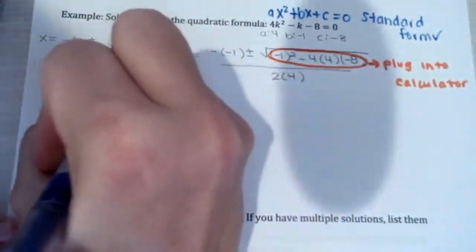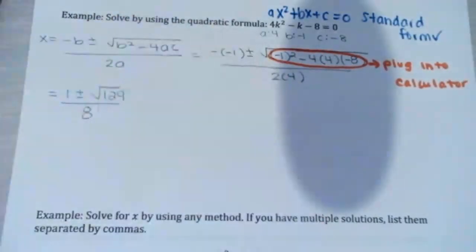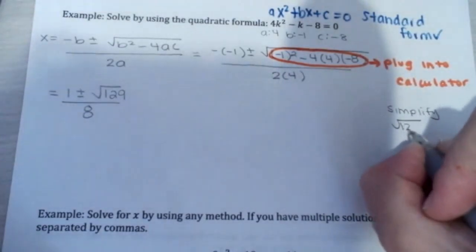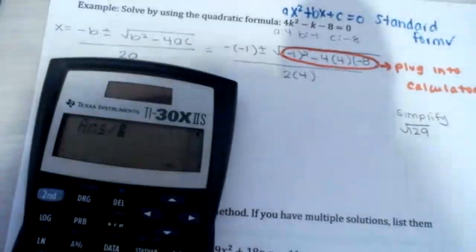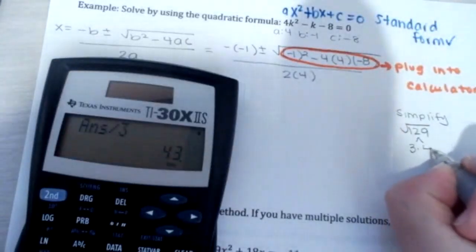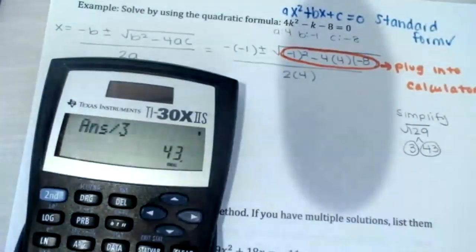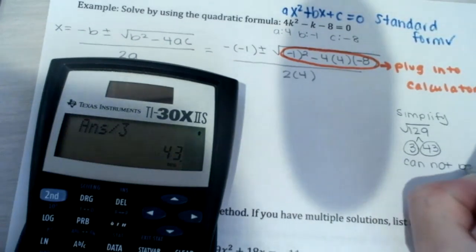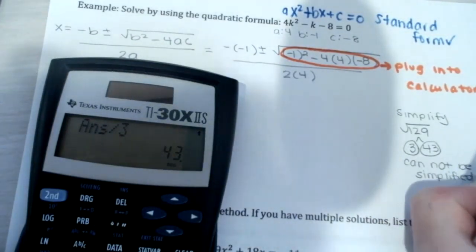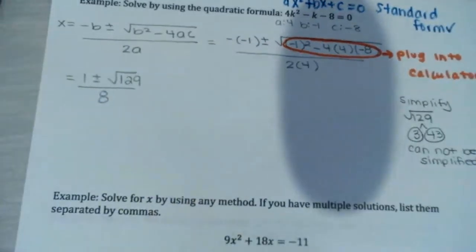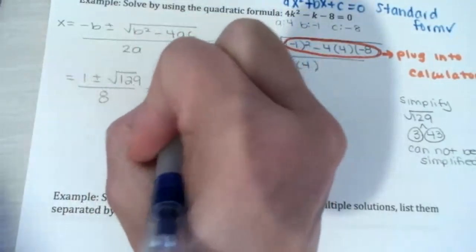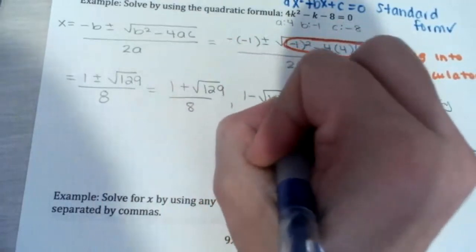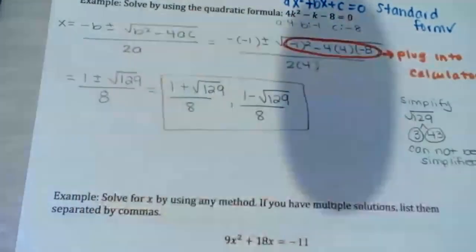So we have 1 plus or minus the square root of 129, all over 8. To simplify: 129 is 3 times 43, and neither can be broken down further. There's no pair, so it cannot be simplified. Our final answers are: 1 plus square root of 129 divided by 8, comma, 1 minus square root of 129 divided by 8.